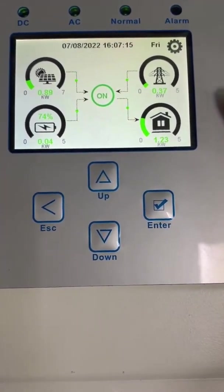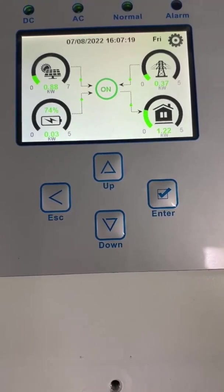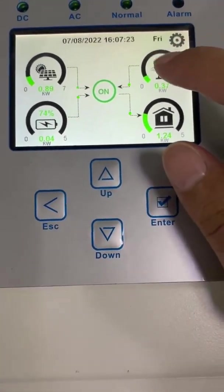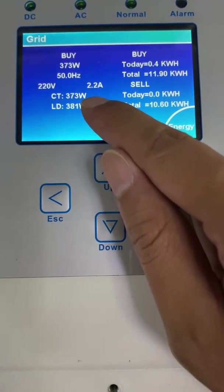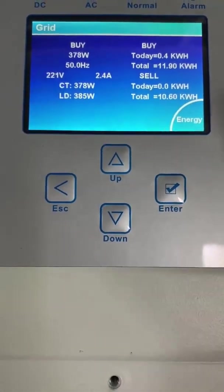And how to judge the meter already communicated with the hybrid inverter? We should check here. Here is the value CT. Now it shows 373 volt. This value will be same with the meter.